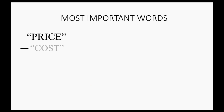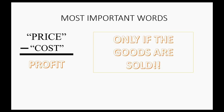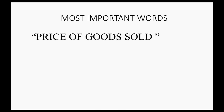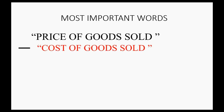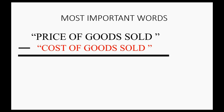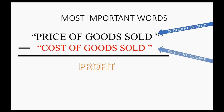Price minus cost equals profit — and we all know that. But only if the goods are sold. So we therefore have to clarify our definition. We should really say: the price of the goods that were sold minus the purchase cost of the goods that were sold is what really equals our profit. The price of the goods that are sold is the value the customer gives us. The cost of the goods that are sold is the value of what we gave to the customer — it's what we paid for the goods that went out.